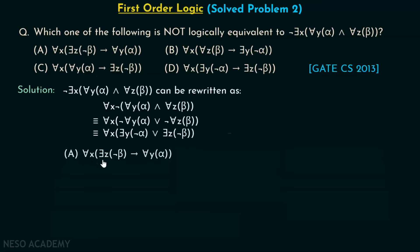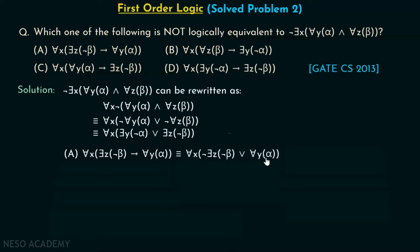Option A: for all x, there exists z, not beta implies for all y alpha. Converting the implication using 'p implies q' equals 'not p or q' gives: not of there exists z, not beta, or for all y alpha. Moving the negation right gives: for all z beta, or for all y alpha. This is definitely not equivalent to our target expression, so option A is a correct answer.